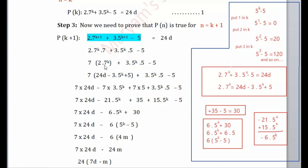Substituting, we get (24d - 3·5ᵏ + 5)·7 + 3·5ᵏ·5 - 5. Multiplying the bracket: 7·24d - 7·3·5ᵏ + 7·5, and the remaining term 3·5ᵏ·5 - 5 stays. This gives 7·24d - 21·5ᵏ + 35 + 15·5ᵏ - 5.